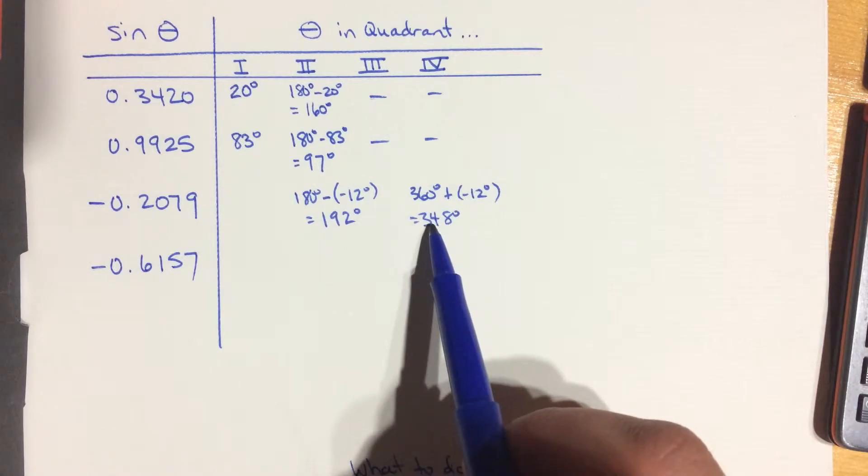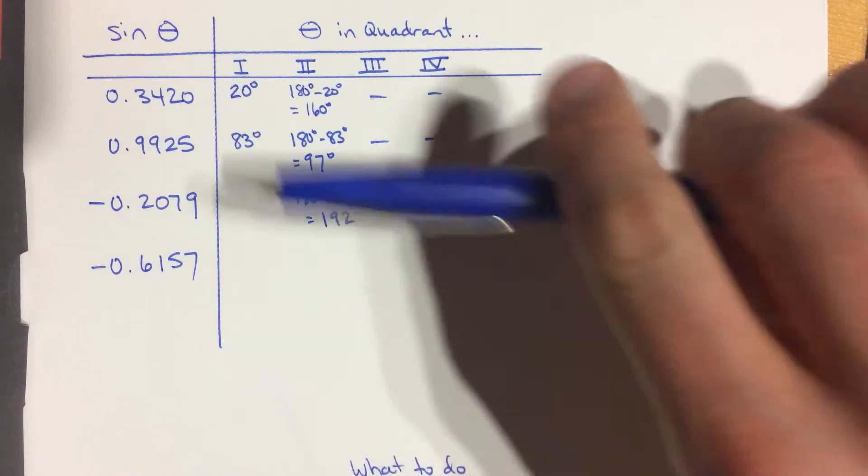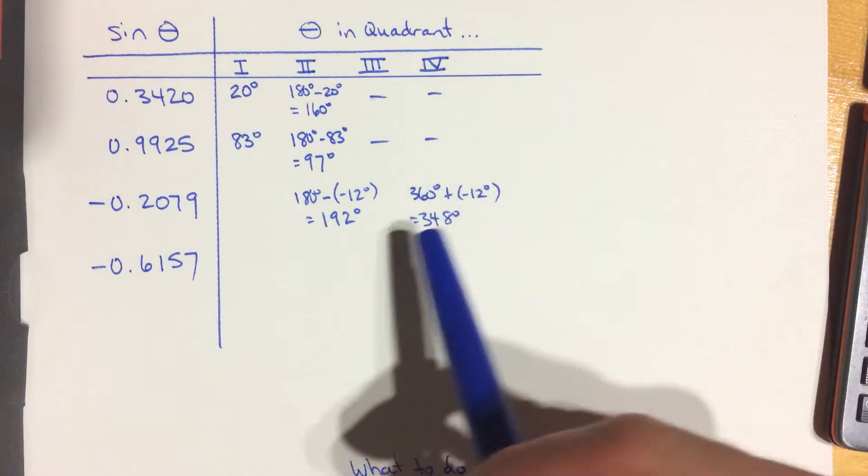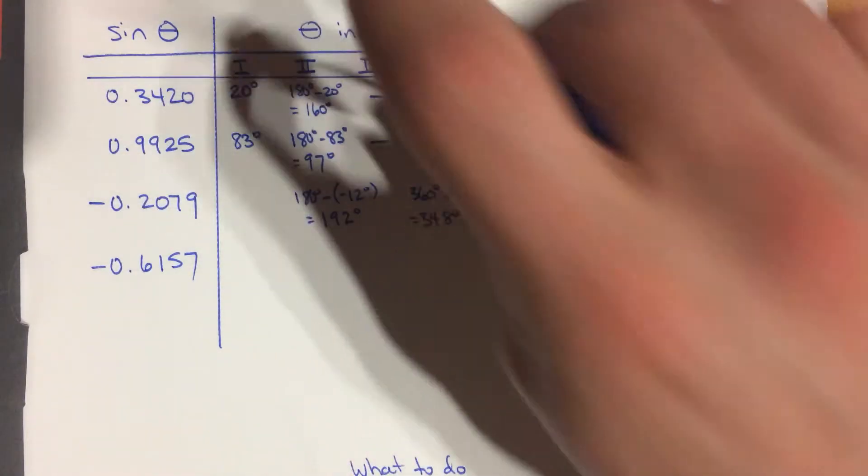And once again, this is 12 degrees below the x-axis on one side, and this is 12 degrees below the x-axis on the other side.